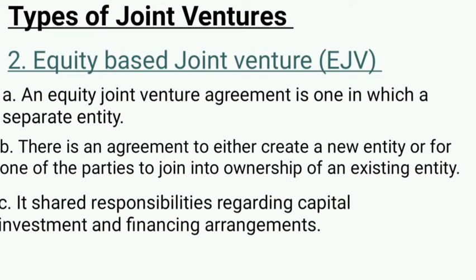The second type is Equity Based Joint Venture. In an equity based joint venture, it is a matter of ownership. An equity joint venture agreement is one in which a separate, different entity has its own agreement — either to create a new entity, or for one of the parties to join into the partnership of an existing entity.